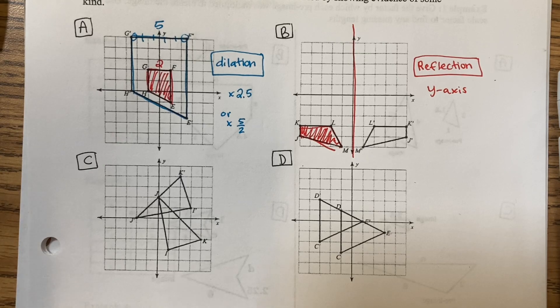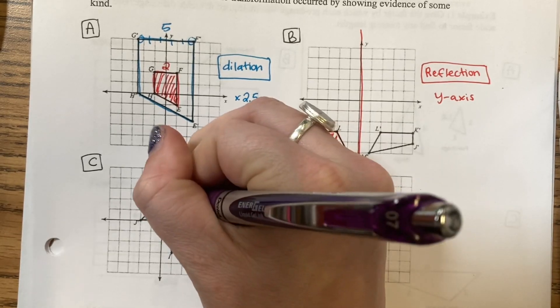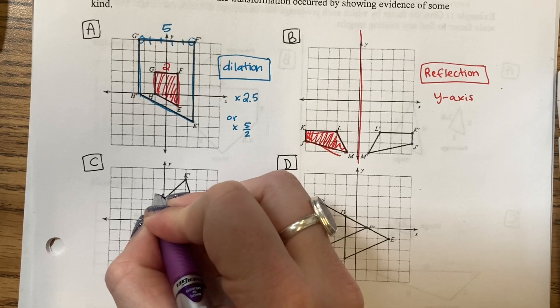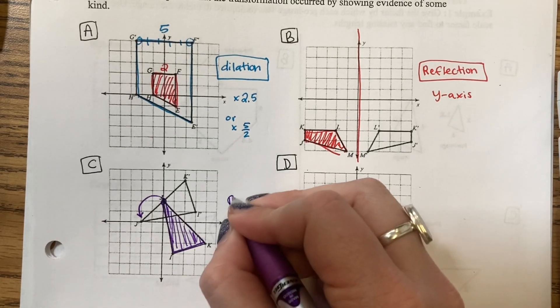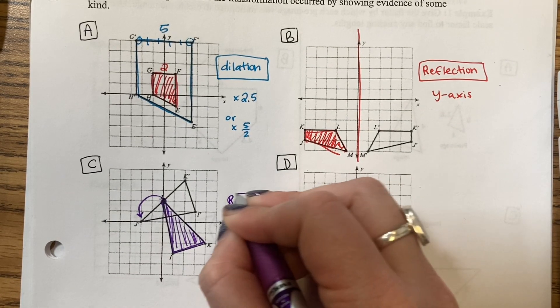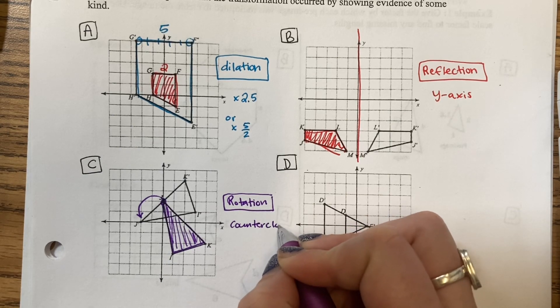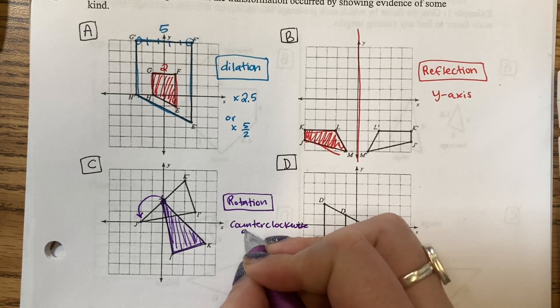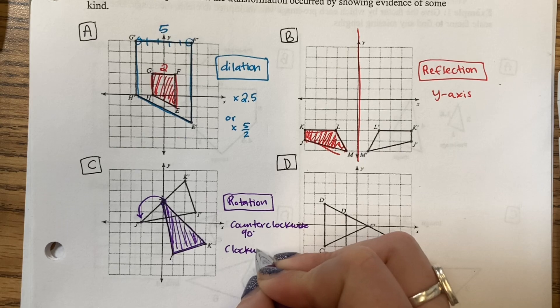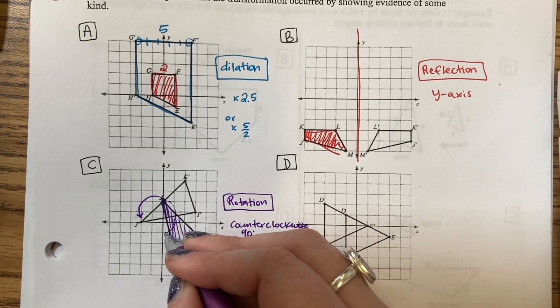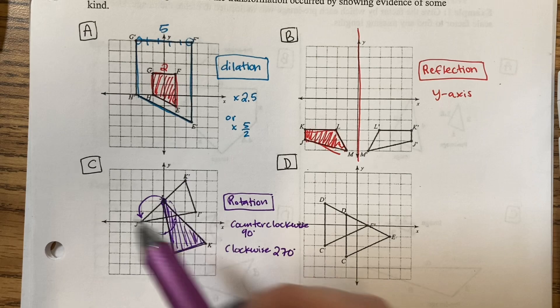Question C. Here is my original triangle. And it was moved to here. It was rotated around the origin. Rotation. And you can say two different ways. Counterclockwise 90 degrees, because it was only one box. Or clockwise, one box, two box, three boxes. That's 270 degrees clockwise. So it just depends on what direction you want to go.